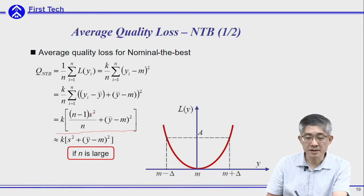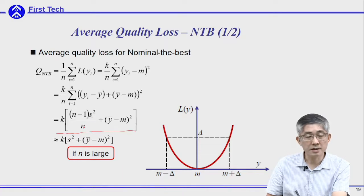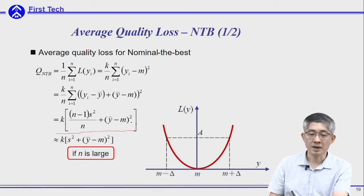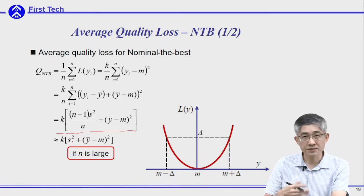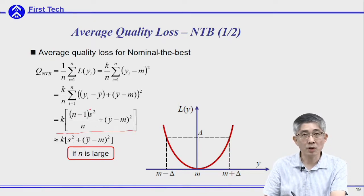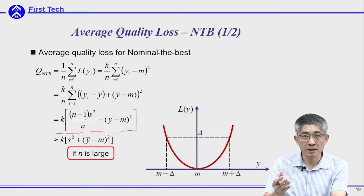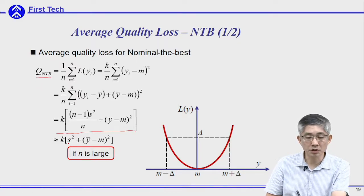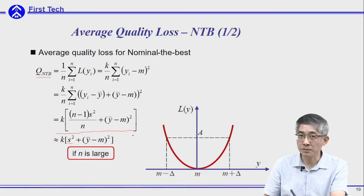In this expression, s is the standard deviation of your sample, n is the number of samples, y-bar is the average output, and m is the target. If you have a large number of samples, then n minus 1 over n will be very close to 1. You can then neglect that term and express the average quality loss as the sum of two terms: s squared plus (y-bar minus m) squared.